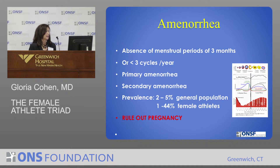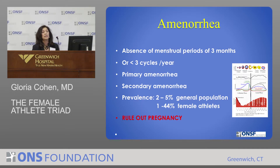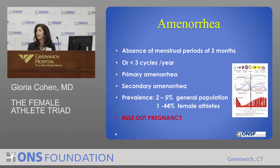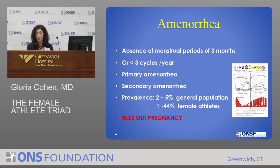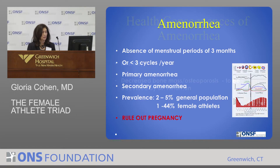Amenorrhea is defined as an absence of menstrual periods of three months, or fewer than three cycles per year. We often ask: have you had fewer than six menses in a year? That's a red flag. Primary amenorrhea means an individual has never had a period; we look at investigations if they haven't had a period by age 17. Secondary amenorrhea means they had periods and then stopped menstruating. Prevalence ranges from 2% to 5% in the general population and from 1% to 44% in female athletes. Always remember to rule out pregnancy.